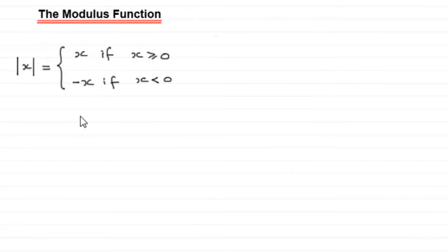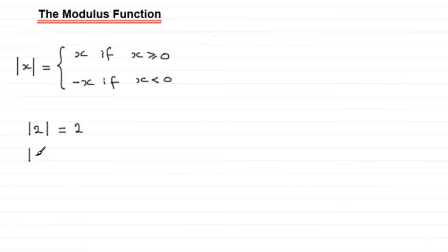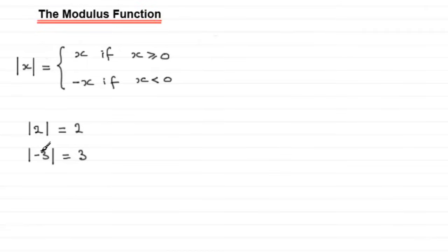What does this mean in practical terms? If you had the mod of 2, then x is 2, which is a positive number, so you just get x — it equals 2. But if you had the mod of minus 3, x is a negative number, less than zero, so you get the negative of x: minus minus 3, which is plus 3, or simply 3. Basically, the modulus function returns the positive value of whatever you have inside the mod sign.